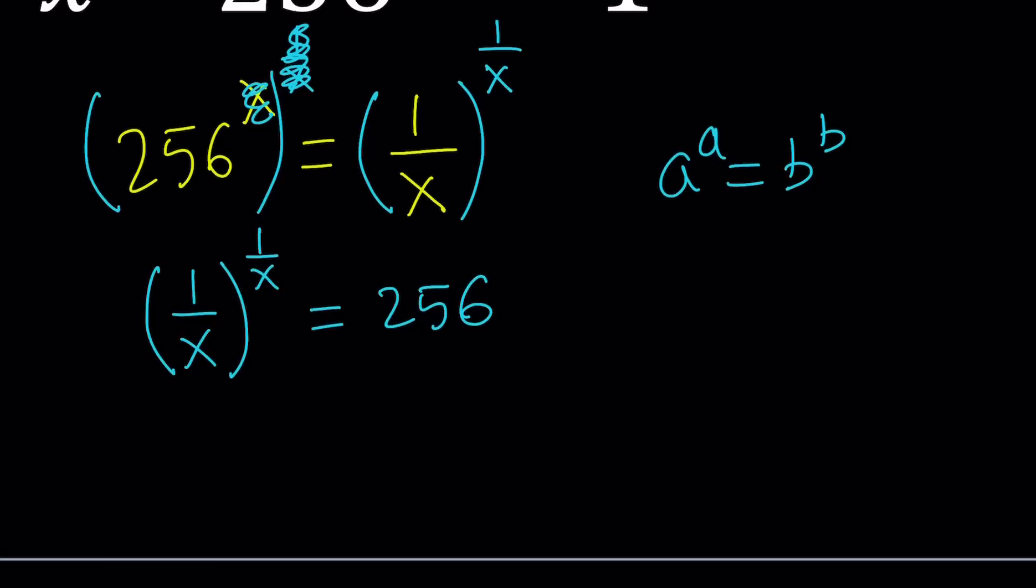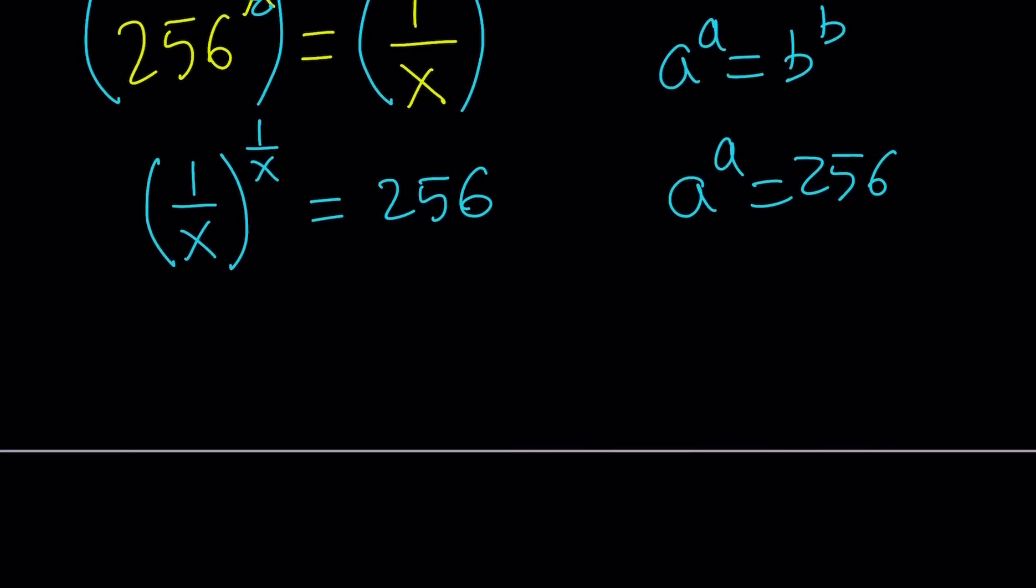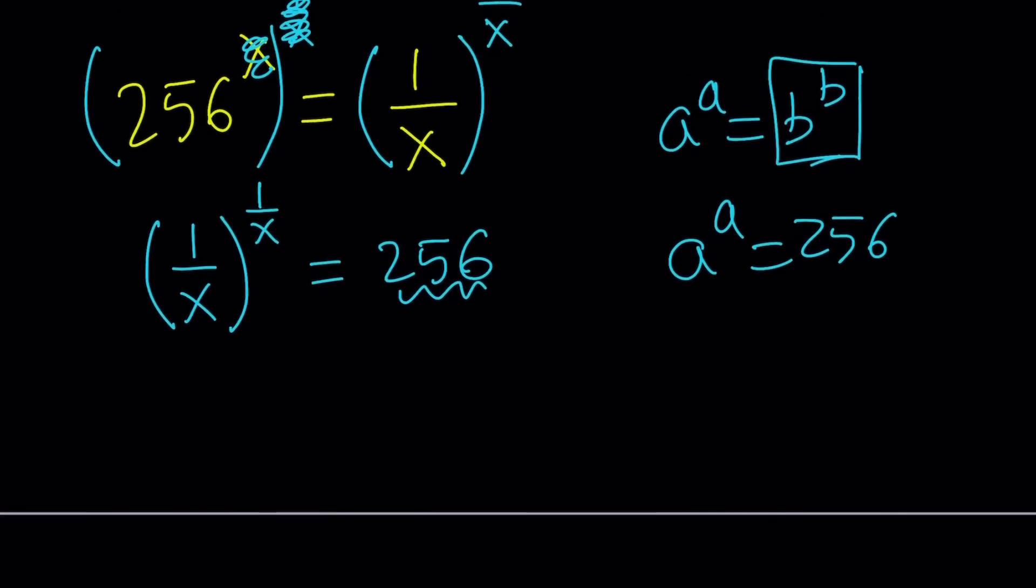At this point, if you want, you can replace 1 over x with a and solve a to the a equals 256 and then back substitute. But we do know that x is actually less than 1. Let's go ahead and take a look at how we can come up with the solution. 256, can it be written as something like b to the power b? Think about it.